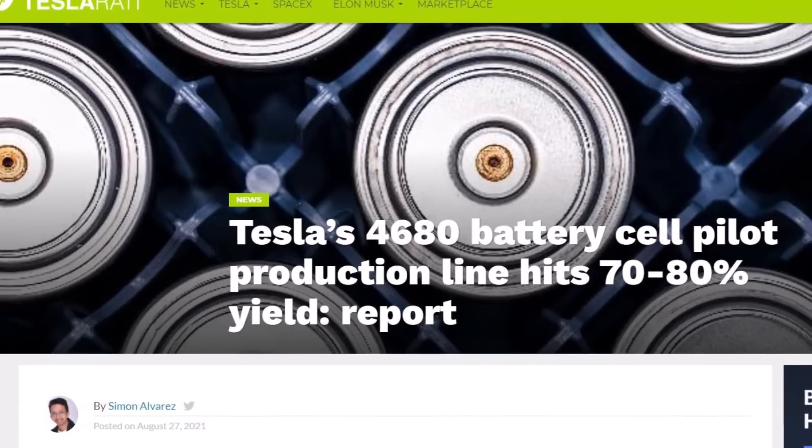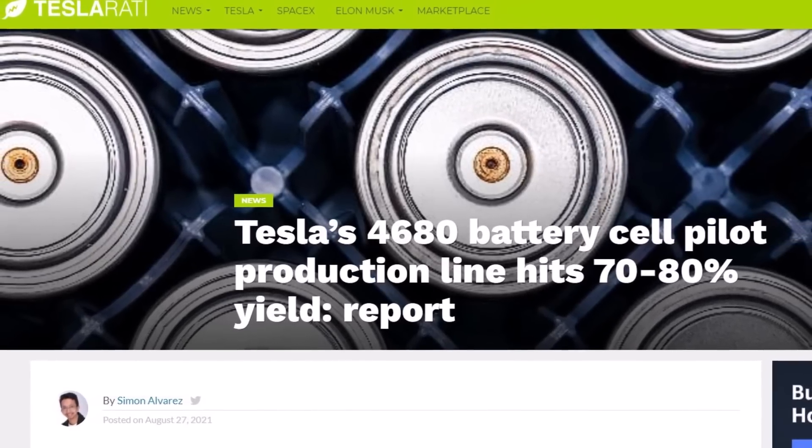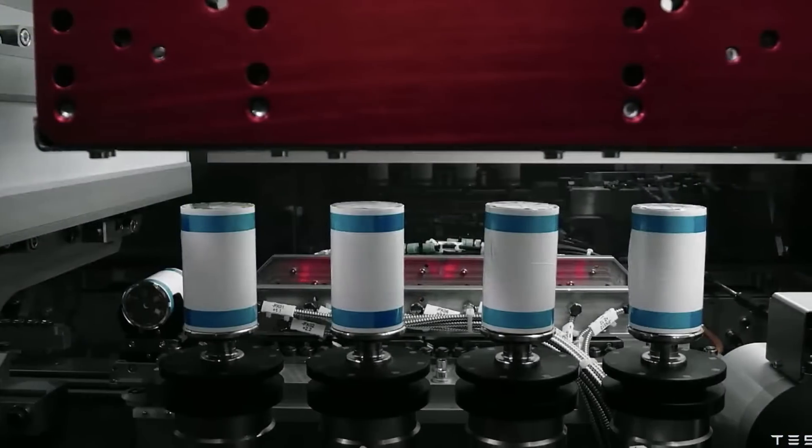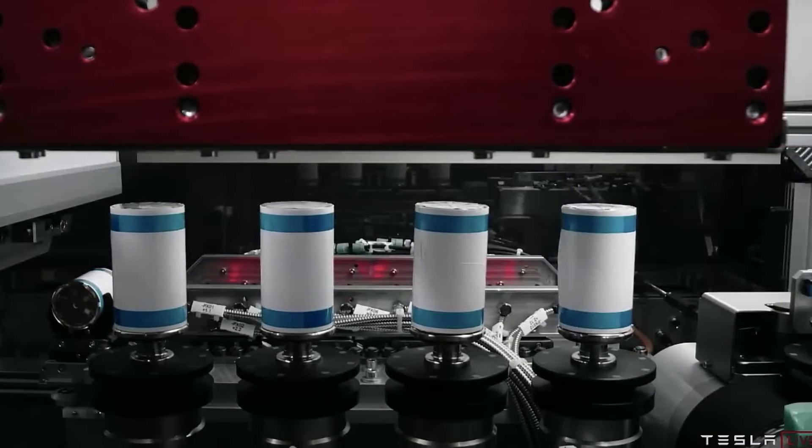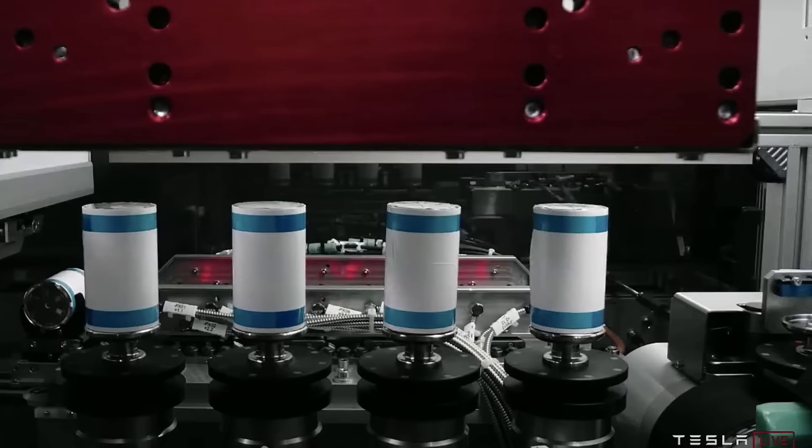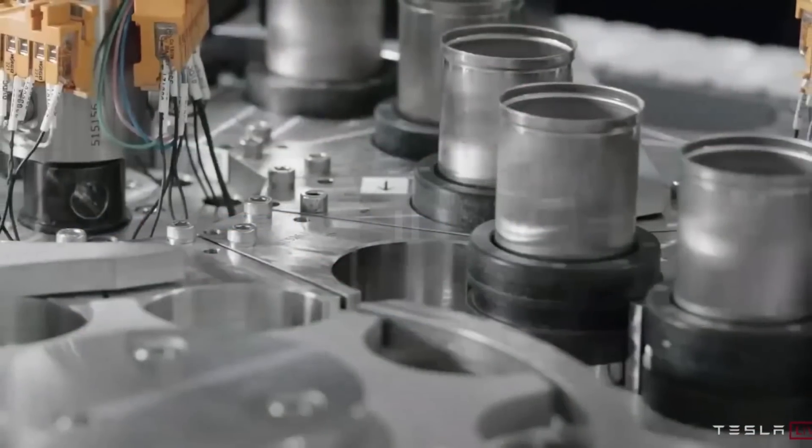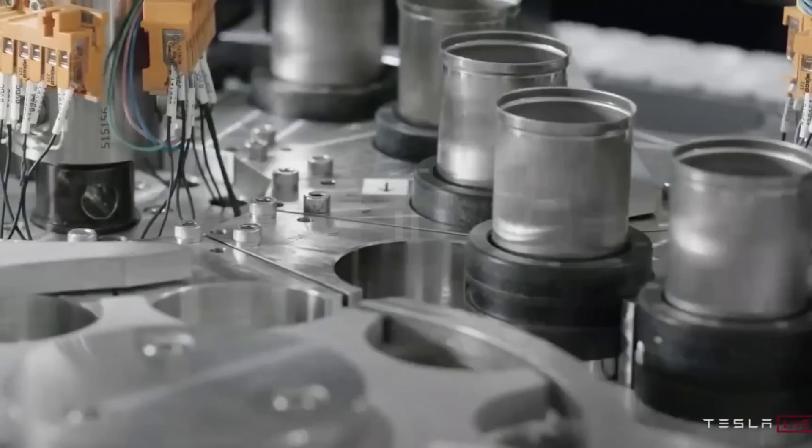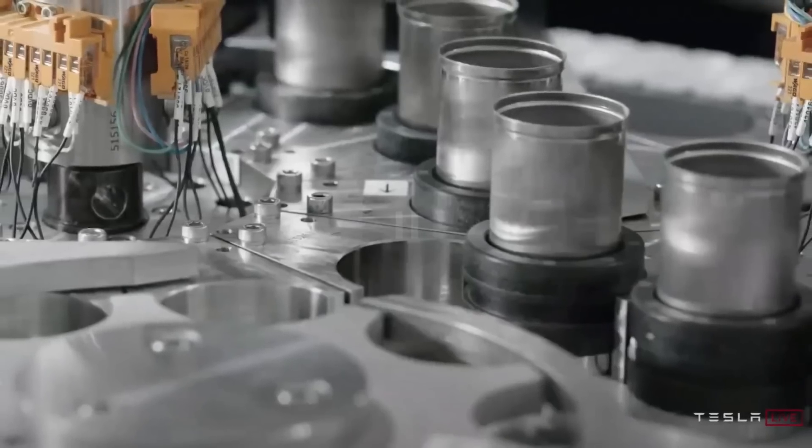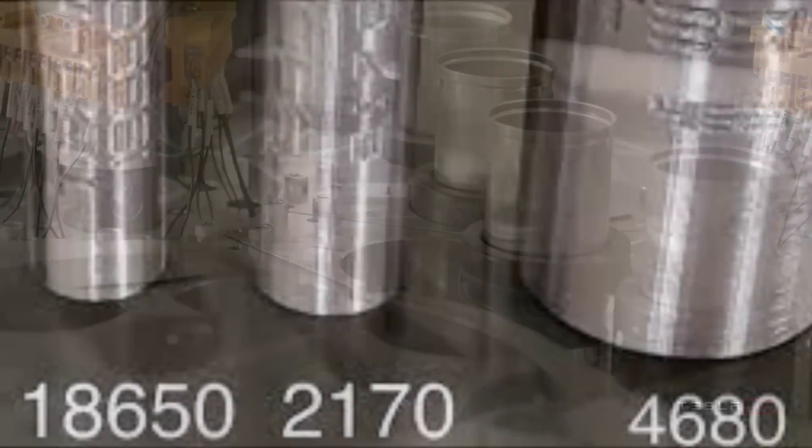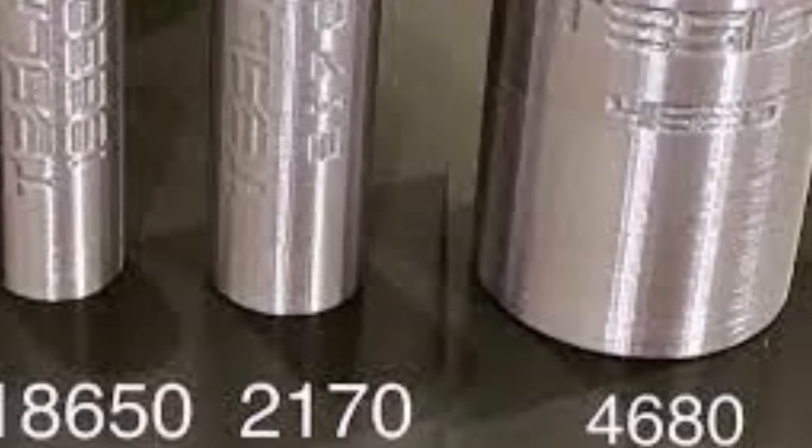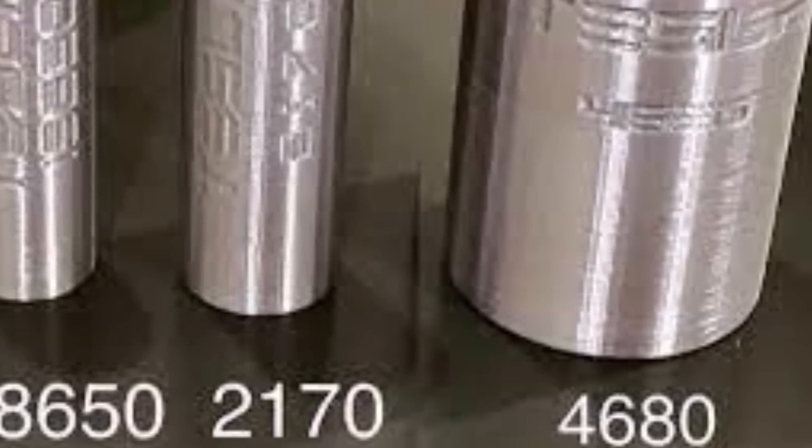We know that at some point the Model Y will end up with the 4680 cells and structural battery pack mega-cast. When you add this together, you end up with 30% range improvement without any improvements in the cell chemistry or DBE technology. So this gives the Model Y a range of about 423 miles EPA.